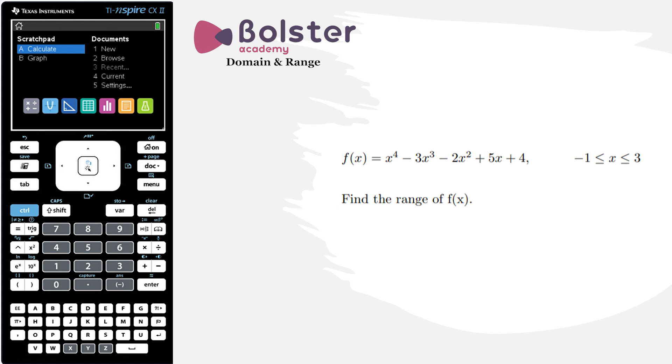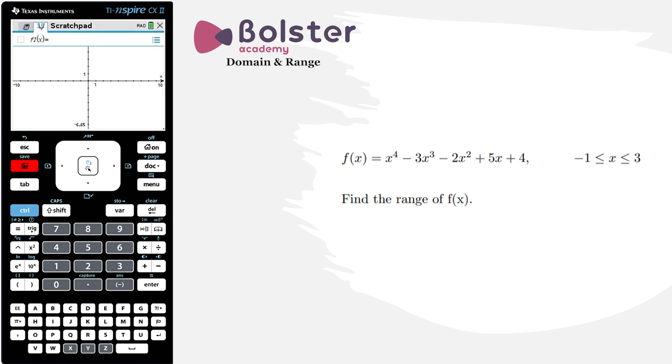Let's look at an example of how to do this on the calculator. Suppose we're given this question: f of x equals x to the 4 minus 3x cubed minus 2x squared plus 5x plus 4, where x is between minus 1 and 3. Find the range of f of x. I'm going to hit my scratch button twice to get into graphical display and input the equation. I've got x to the 4 minus 3x cubed, minus 2x squared, plus 5x plus 4, and I hit enter.